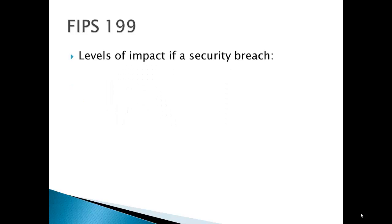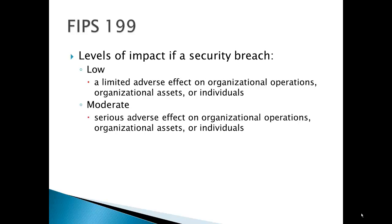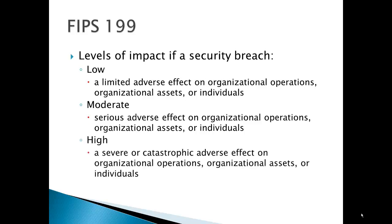FIPS 199 also requires that you look at levels of impact if a security breach occurs. A low level of impact is defined as a limited adverse effect on organizational operations, assets, or individuals. A moderate impact event is defined as a serious adverse effect on operations, assets, or individuals. And high is a severe or catastrophic adverse effect on operations, assets, or individuals. So the impact is on the people, the assets, and the operations — and you've got a low, moderate, to high scale, which is your basic qualitative impact scale.